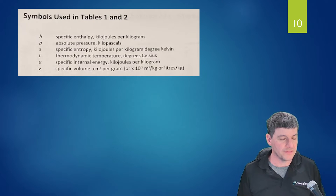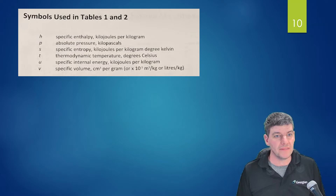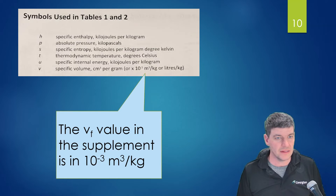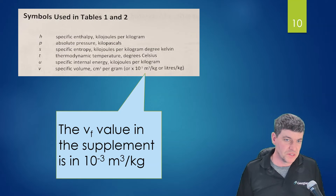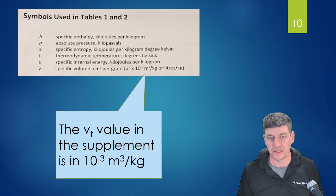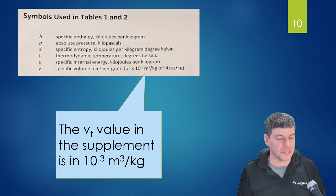One thing we have to be careful of is units when converting specific volume to density. On the very first page of your steam tables in the supplement, it states that the v value — specific volume — is measured in cubic centimeters per gram, or equivalently, times 10 to the negative 3 cubic meters per kilogram. So we have a small conversion to worry about; that value such as 1.00036 is in equivalent units we'll use for density.